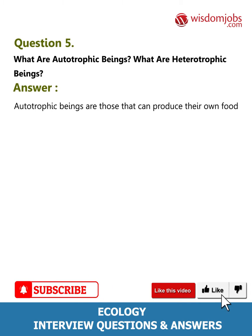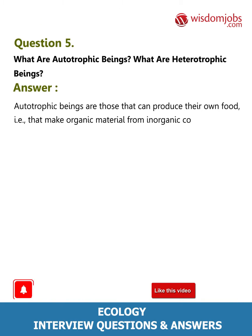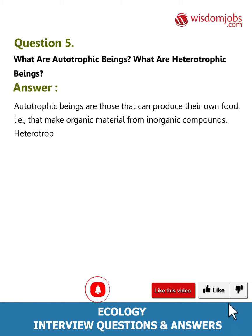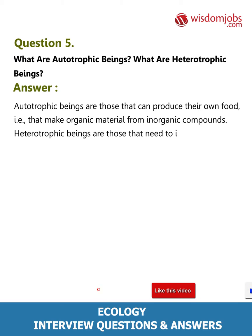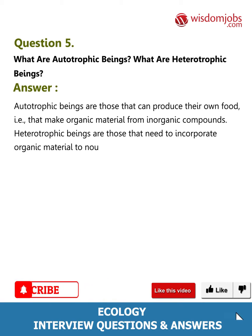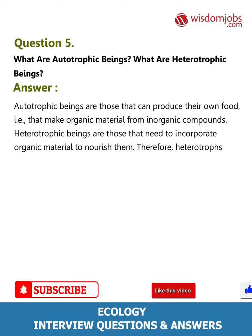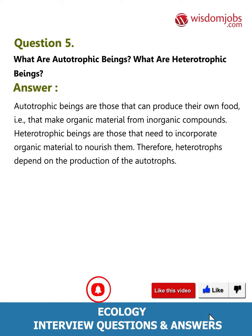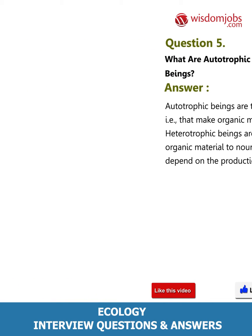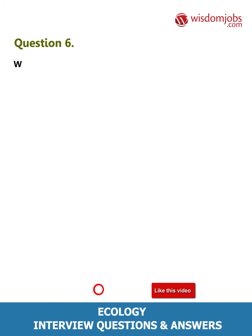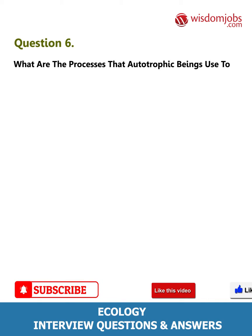Question 5: What are autotrophic beings? What are heterotrophic beings? Autotrophic beings are those that can produce their own food, making organic material from inorganic compounds. Heterotrophic beings are those that need to incorporate organic material to nourish themselves; therefore, heterotrophs depend on the production of the autotrophs.